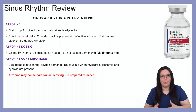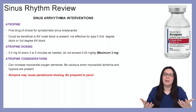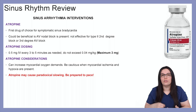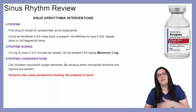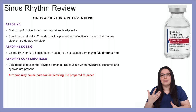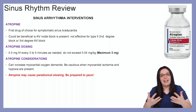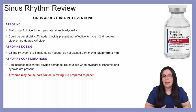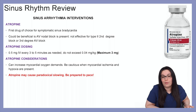There hasn't been shown any benefit for second degree type 2 heart blocks or third degree complete heart blocks — you may still see it, but it just might not show benefit. Atropine dosing is 0.5 milligrams IV every 3 to 5 minutes, not to exceed 0.04 milligrams per kilogram with a maximum of 3 milligrams. Considerations: it can increase myocardial oxygen demand, so we have to be cautious if there is myocardial ischemia or hypoxia present. It's important to note that atropine can cause paradoxical slowing — sometimes instead of bringing the heart rate up, it can actually slow it down further, so we need to be prepared to pace these patients.